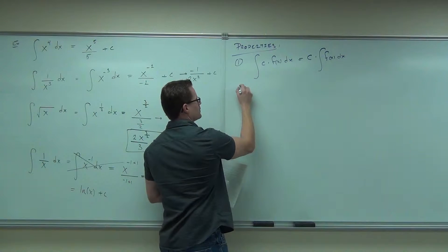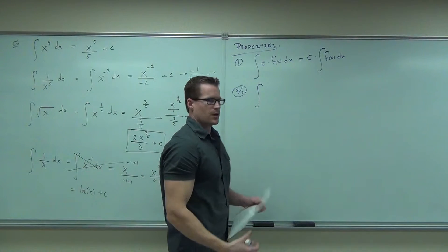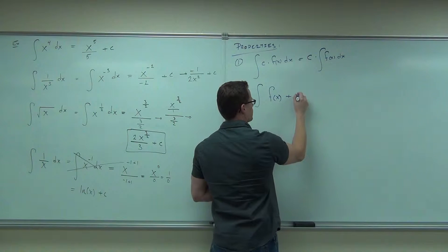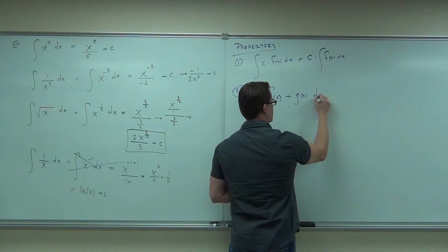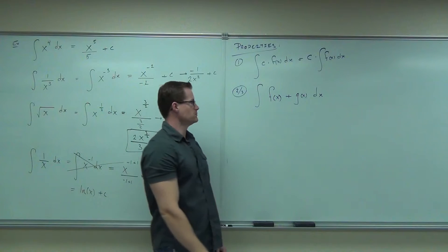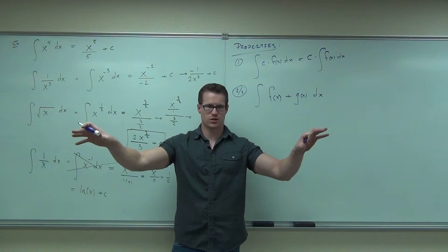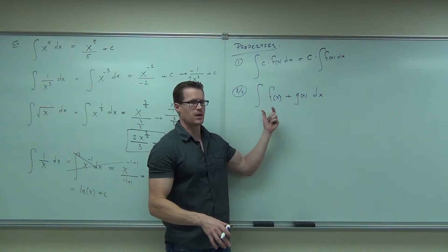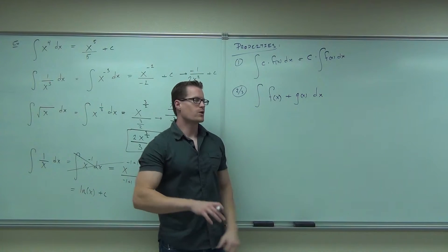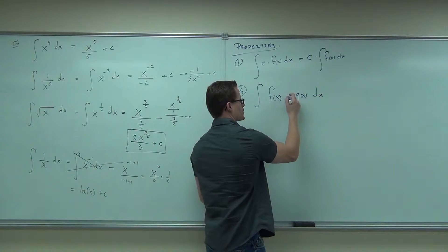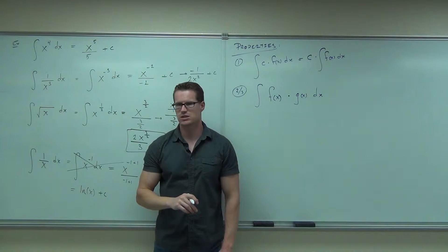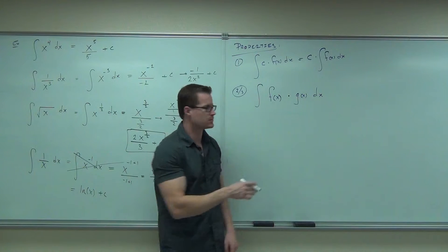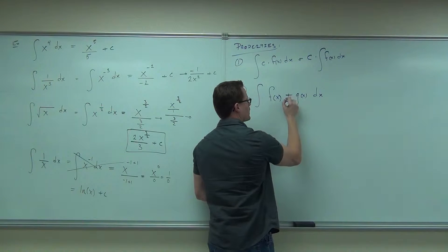I'm going to put properties 2 and 3 together. They say: suppose you had two functions being added together within your integral. With derivatives, we could separate those — take the derivative of the first one plus the derivative of the second. That means here it works as well: you do the integral of the first one plus the integral of the second. What we couldn't split up was multiplication — we still can't do that with integrals either.